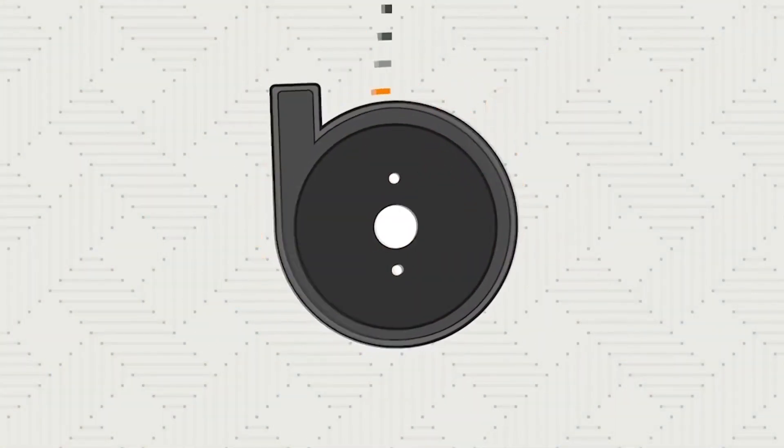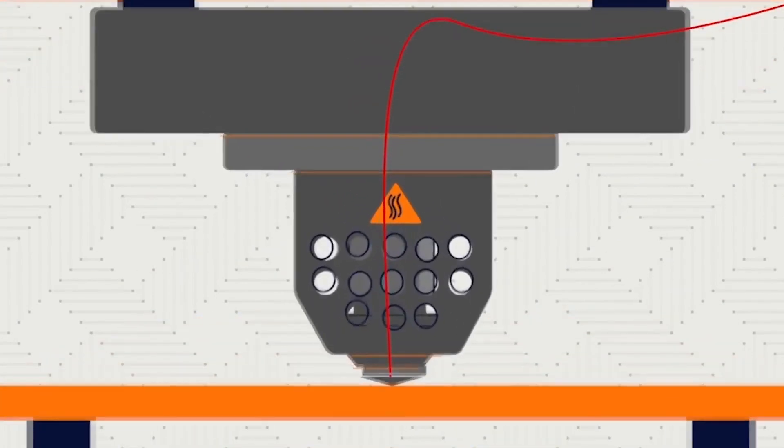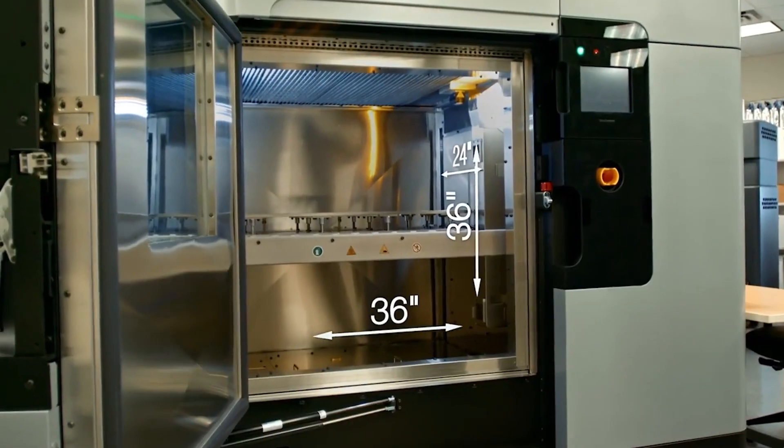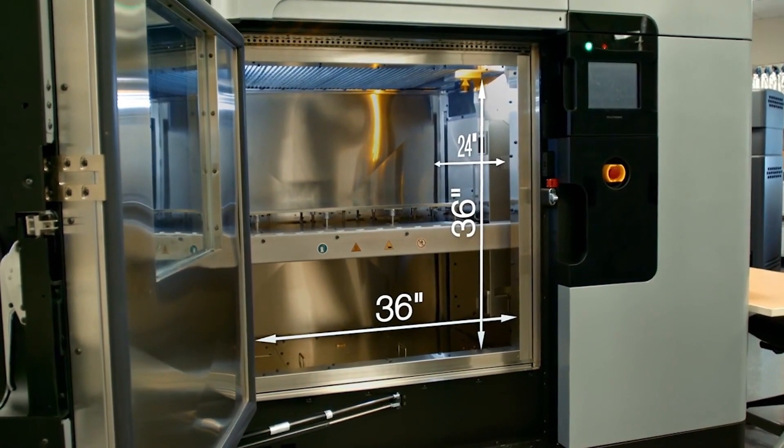Fused Deposition Modeling Technology, or FDM for short, is an additive manufacturing staple that builds objects layer by layer using a liquefied thermoplastic extrusion process inside of a uniformly heated build chamber.